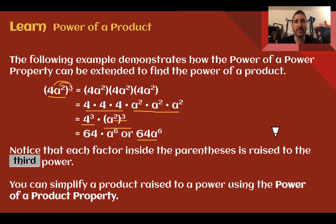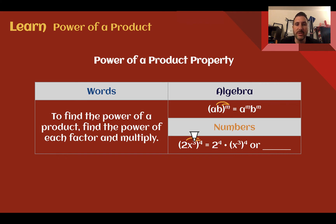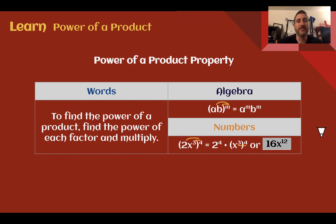This is the power of a product property. To find the power of a product, find the power of each factor and multiply them together. So if I had two factors to the m power, it's like doing each factor to that power. For example, 2x to the 3rd raised to the 4th: distribute the 4th to each factor — 2 to the 4th times x to the 3rd to the 4th — giving 16 times x to the 12th. We distribute that power to each factor and combine.